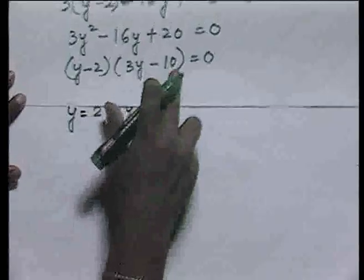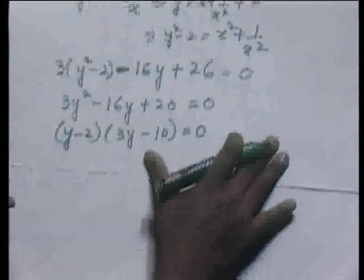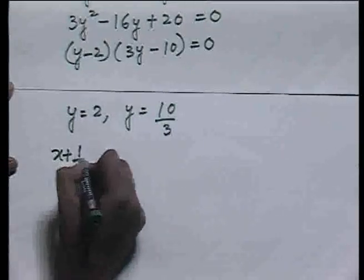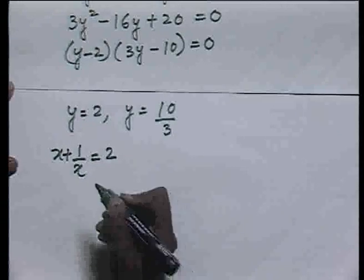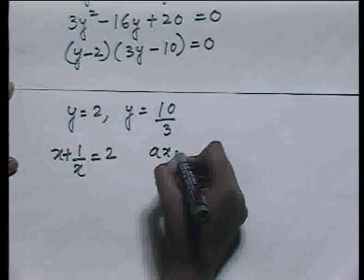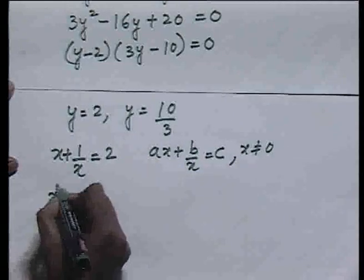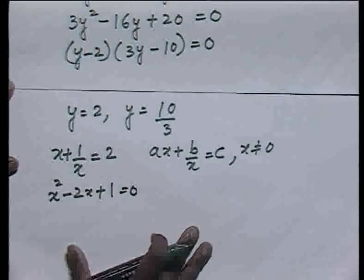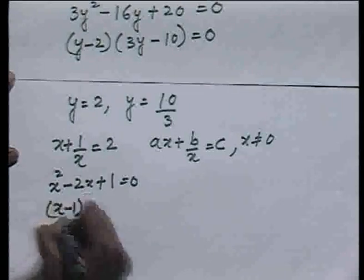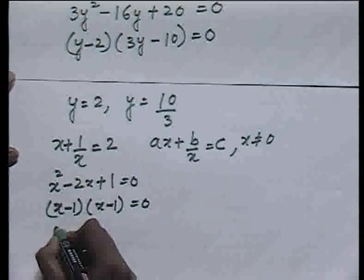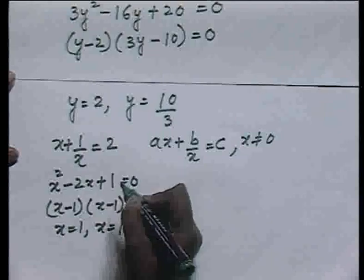But we want the value of x, because the equation given to us was in x. Replacing y by x + 1/x, we get x + 1/x = 2. We have solved equations of this type in our earlier lesson — of the form ax + b/x = c, where x ≠ 0. Solving this equation, we get x² - 2x + 1 = 0. The factors are (x - 1)(x - 1) = 0, giving us real and equal roots x = 1.